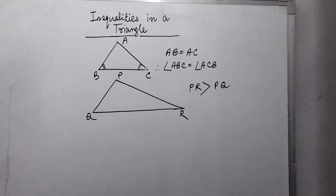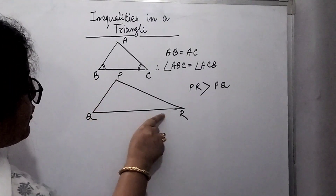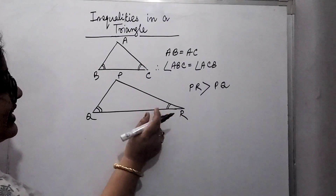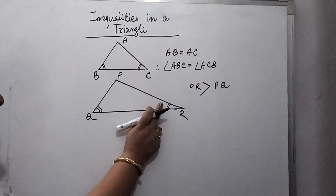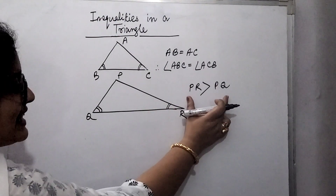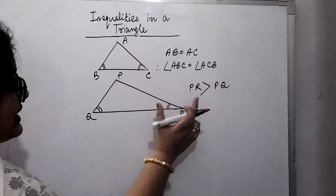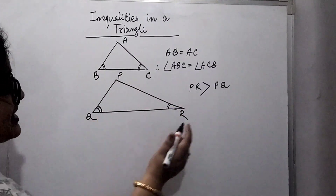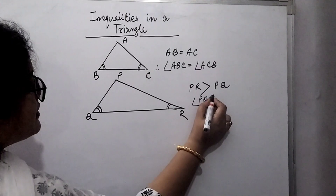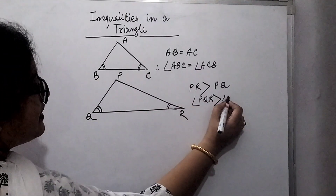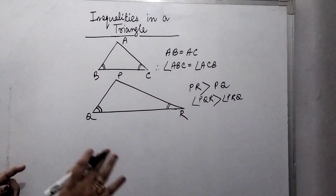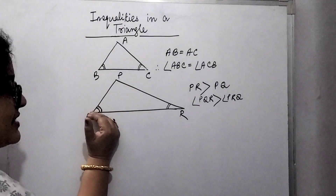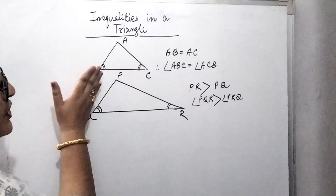Now if the sides are not equal — suppose in triangle PQR, the measurement of side PR is greater than side PQ. Then the angle opposite to PR, which is angle PQR, will be greater than the angle opposite to PQ, which is angle PRQ. So angle PQR is greater than angle PRQ.